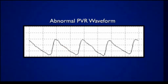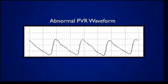This is an abnormal waveform. Distal to an arterial occlusion, the waveform becomes more rounded, the rise and fall times are extended, and the peak is less pronounced. After peaking, the waveform drops quickly and there is a noticeable dicrotic notch on a normal waveform.